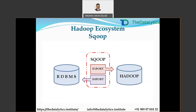Traditional application management systems — the interaction of applications with relational databases using RDBMS — is one source generating big data. Such big data generated by RDBMS is stored in relational database servers. When you want to move such data to HDFS or Hadoop, you need Sqoop. The beauty of Sqoop is it performs both export and import.